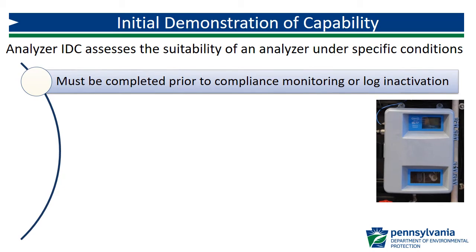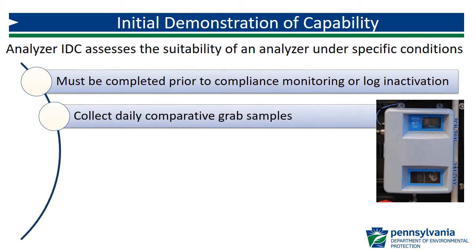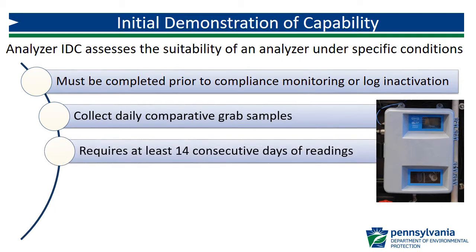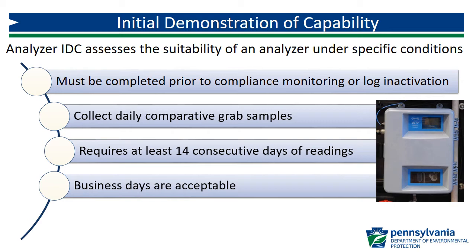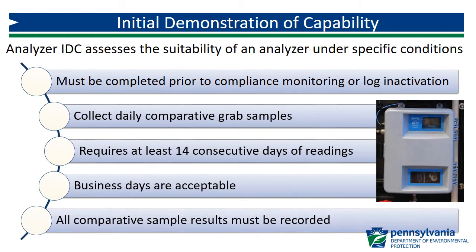The Analyzer Initial Demonstration of Capability, or IDC, is used to assess the suitability of an analyzer for chlorine residual analysis under specific water quality and operating conditions. The IDC must be completed prior to using an analyzer for compliance monitoring or to obtain results used to calculate log inactivation. It requires the collection of daily comparative grab samples using an approved grab sample method, which has completed all of the Method 334.0 grab method requirements. A minimum of 14 consecutive days of grab analyses are required to complete the IDC. In situations where planned operation is not continuous, 14 consecutive business days or operating days is acceptable. All comparative grab sample results during the IDC must be recorded, regardless of whether they meet the applicable acceptance criteria.